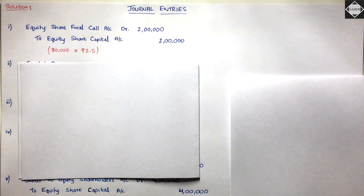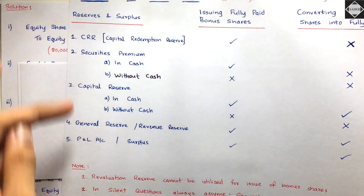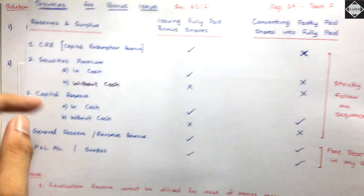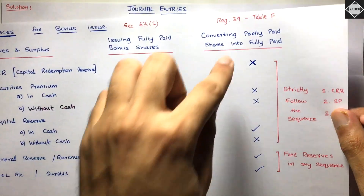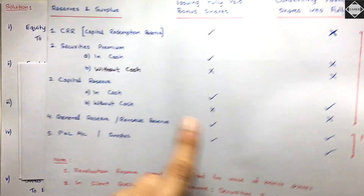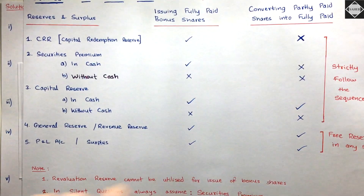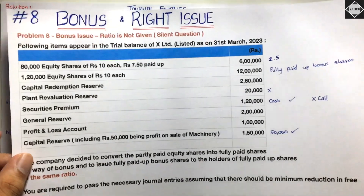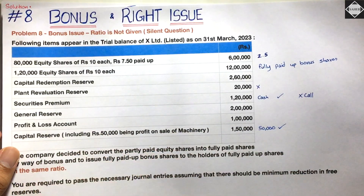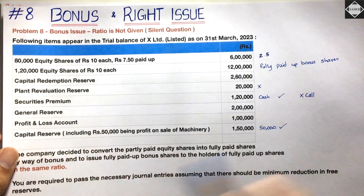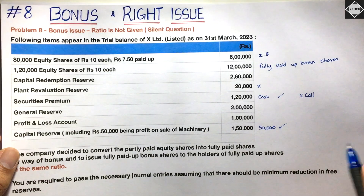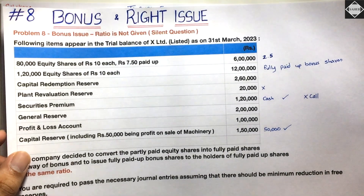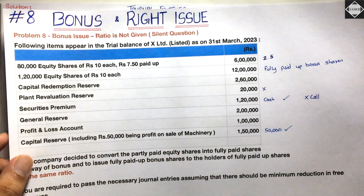For the bonus call, you need to know the sequence in which to use reserves: first CRR, then securities premium, then capital reserve, then free reserves. However, for bonus call specifically, we cannot use CRR, we cannot use securities premium — we can use capital reserve realized in cash, and then free reserves. From the question, we have capital reserve of 50,000 realized in cash — we will use that. If we need more, we go to free reserves.